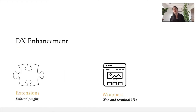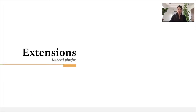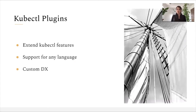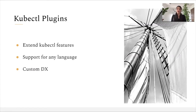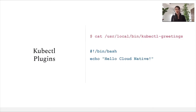When we refer to DX enhancement with kubectl, we can identify two main areas: extensions and wrappers. The extensions are going to be represented by kubectl plugins, while the wrappers are going to be represented by web and terminal UIs. If you'd like to extend your kubectl commands, then you're going to write a plugin which will be able to provide these custom extensions for your end users to consume. The important thing about plugins is the fact that they can be written in any language — underneath they're just a binary. As long as they have the right file name and are in the right location, they'll be identified by kubectl and end users will be able to utilize them.